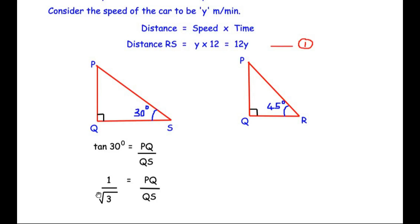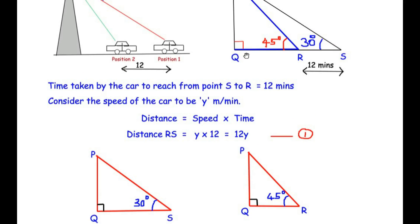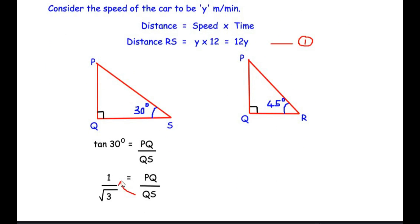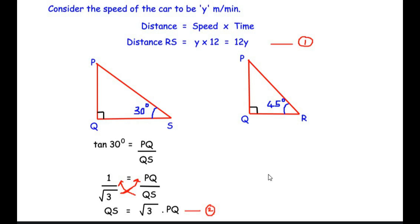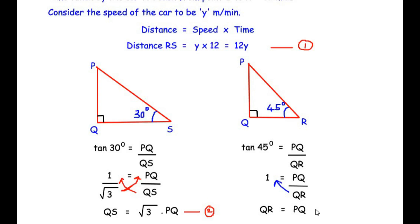For triangle PQR, tan 45° equals PQ over QR. Tan 45° equals 1, so 1 = PQ/QR, giving QR = PQ. This is equation 3. Now the distance RS is the difference between QS and QR, so RS = QS − QR. Substituting: 12y = √3·PQ − PQ = PQ(√3 − 1). Therefore PQ = 12y / (√3 − 1).